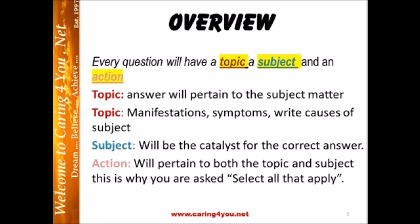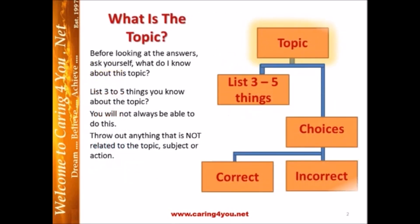This is why we have select all that apply. Let me explain a little bit more about the topic. Before looking at any answers, ask yourself: do I know about this topic? Pick the topic out — do I know about this topic? If you do, then list in your mind three to five things you know about the topic. Keep in mind that you will not always be able to list three to five things. For example, if 'manifestations' is the topic, that's not enough information to list three to five things. So you might not always be able to do it, and that's okay. Then you want to throw out anything that is not related to the topic, subject, or action when doing multiple choice questions.